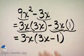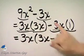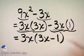Now, there's a couple of ways to check. We can check by multiplying 3x times 3x is 9x squared, 3x times 1 is 3x. And of course, there's my subtraction. That's one check.